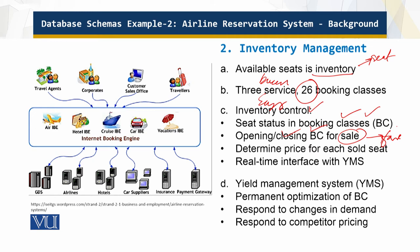The price of each sold seat is determined based on those factors. There is also the Yield Management System, which performs permanent optimization of booking classes to ensure profitability. It responds to changes in demand and to competitor pricing as well. This is automated — this is how inventory management works.